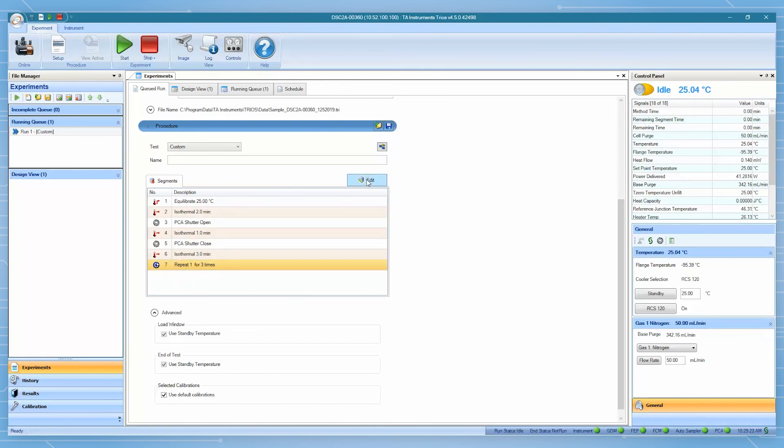If running the PCA experiment with an RCS, loading and unloading samples should always be done when the cell has reached ambient temperature or above to avoid condensation. Choose the end of test condition slightly above room temperature.